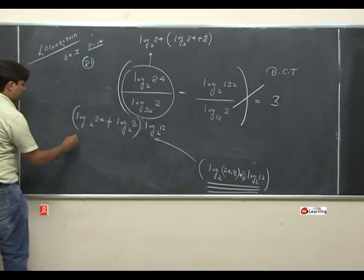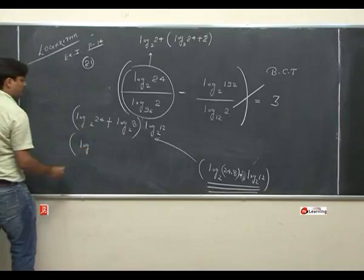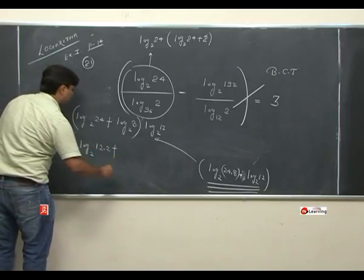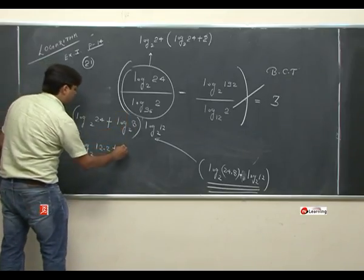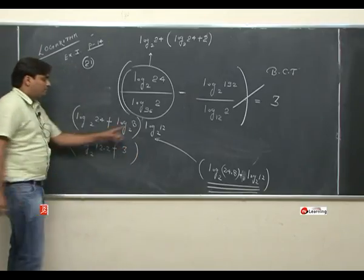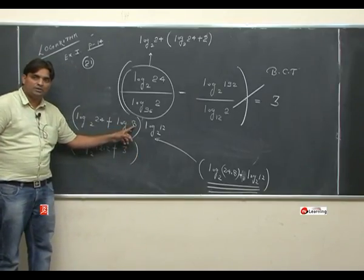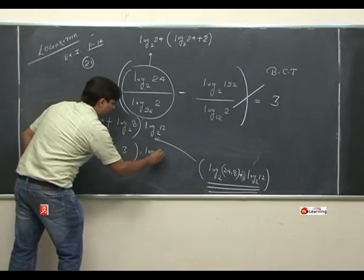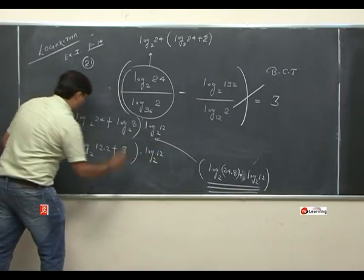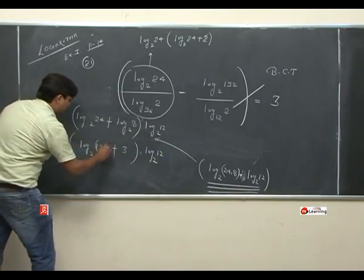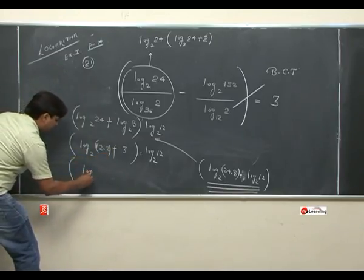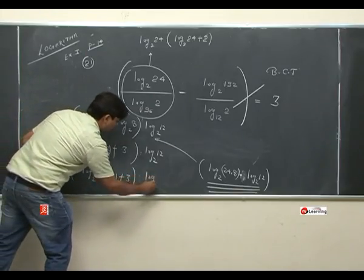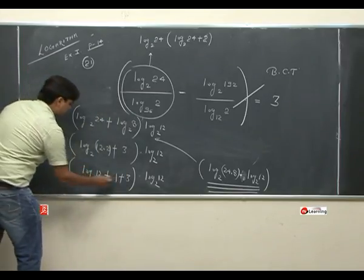इसको मैं continue करता हूँ: [log 24 base 2 + log 8 base 2] into log 12 base 2. अब 24 को मैं लिख रहा हूँ log(12 into 2) base 2, और 8 को लिख सकता हूँ 2 की पावर 3। 3 आगे जाएगा: 3 into log 2 base 2 = 3 into 1 = 3. तो यह: log 12 base 2 + log 2 base 2 (1), plus 3 into log 12 base 2 → log 12 base 2 + 1 + 3 = 4. तो यह term है: (log 12 base 2 + 1) + 4 into log 12 base 2.